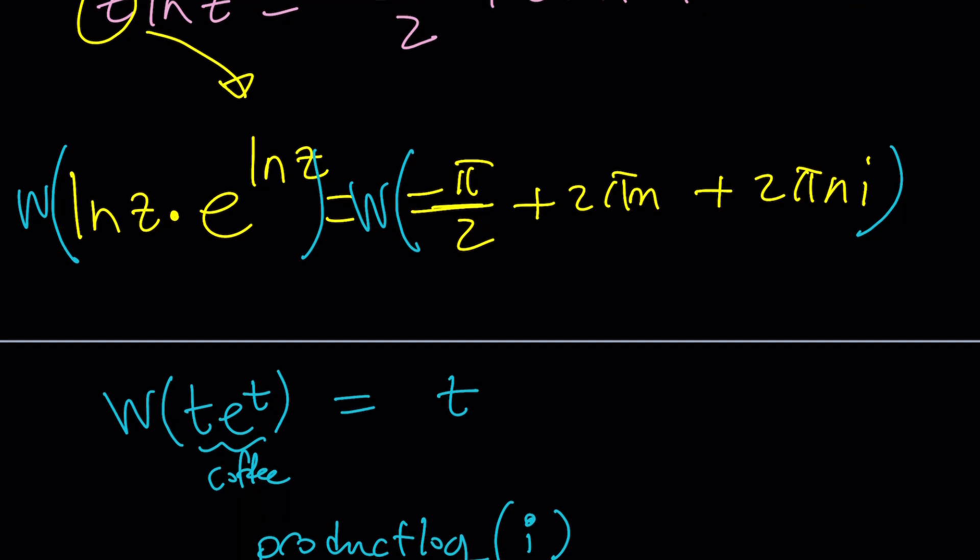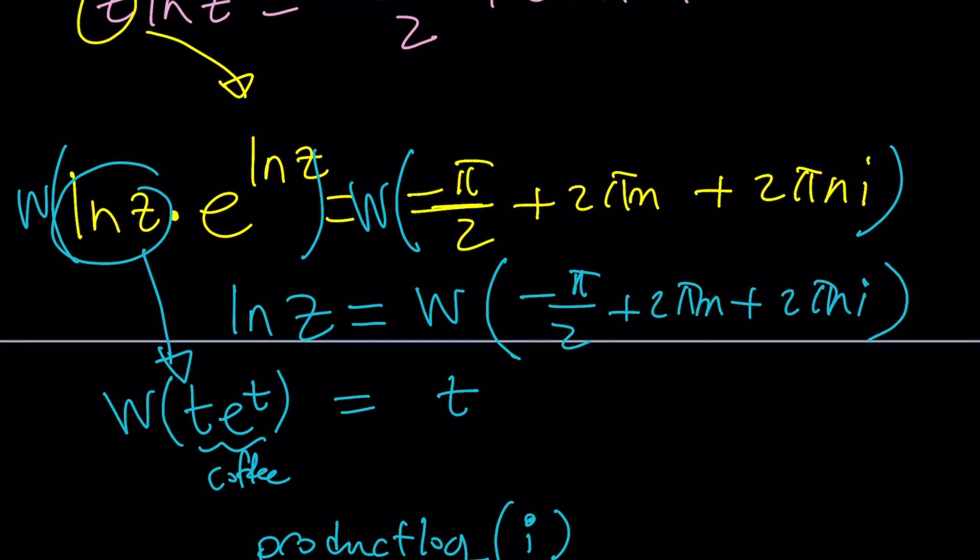So, anyways, here, application gives us ln z, because that's my t. Notice that? That's my t here. And on the right-hand side, I get W of something not that simple. Super complicated. It's a multi-value thing.